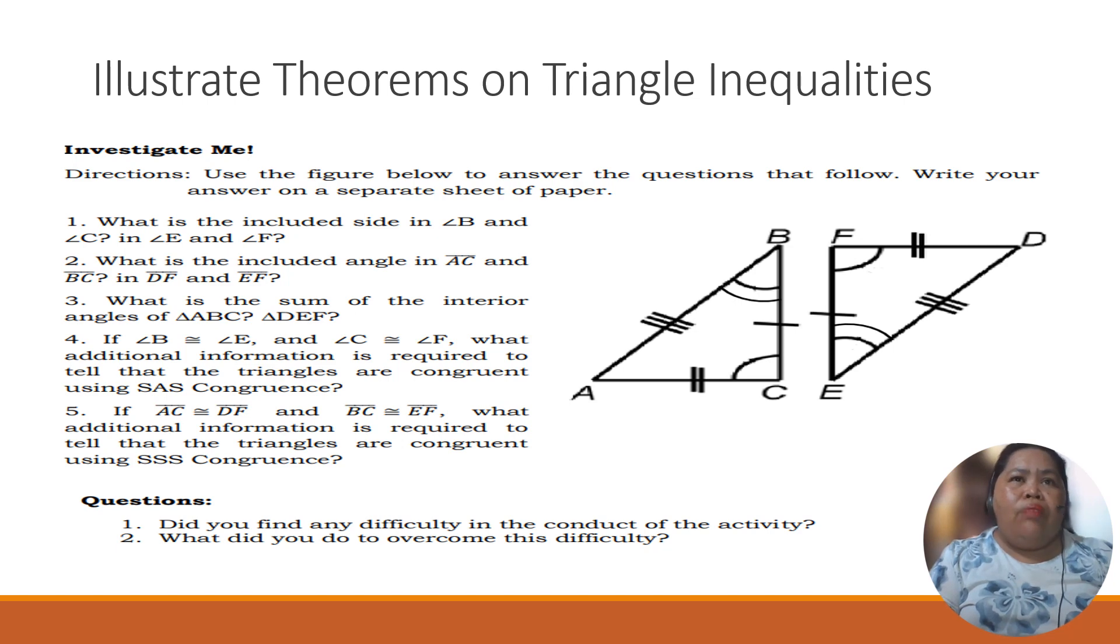So, what is the sum of the interior angles of a triangle ABC? Of course, if we are going to find the sum of this, that is 180 degrees. Same also with DEF. Because the interior angles of any triangle is equal to 180 degrees.